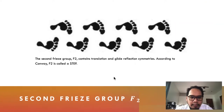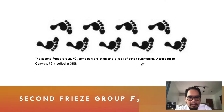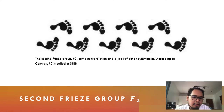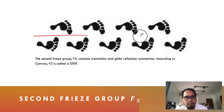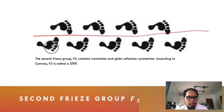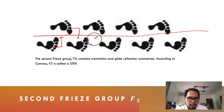Frieze group two, F-sub-2, is what Conway called a 'step.' It is composed of glide reflection symmetries — you glide, meaning you slide and translate, then you reflect. Imagine there is a line of symmetry: you translate, you reflect; from there, you translate, you reflect; and so on until you produce the frieze pattern.